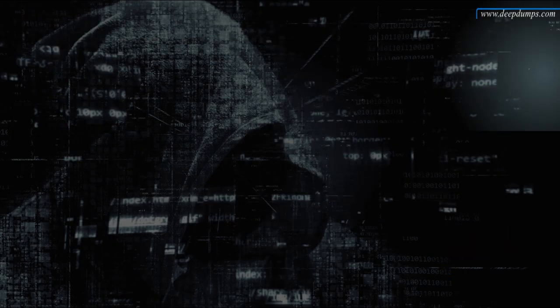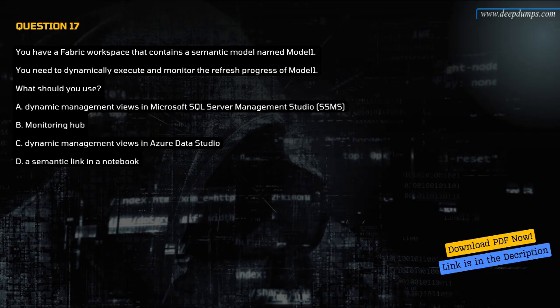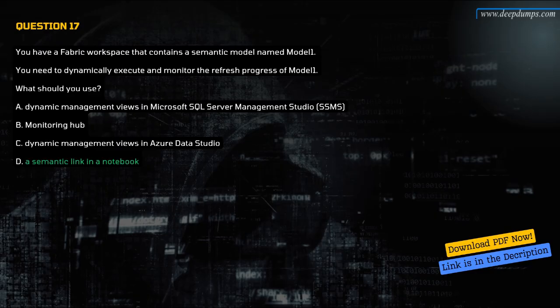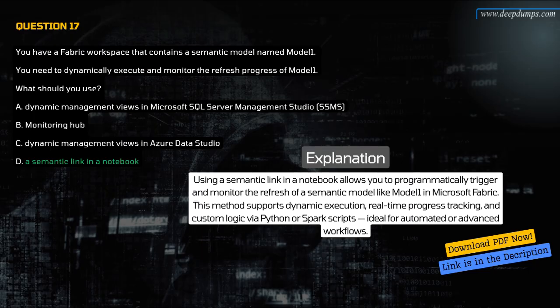Question 17. You have a Fabric workspace that contains a semantic model named Model 1. You need to dynamically execute and monitor the refresh progress of Model 1. What should you use? A. Dynamic management views in Microsoft SQL Server Management Studio. B. Monitoring hub. C. Dynamic management views in Azure Data Studio. D. A semantic link in a notebook. The correct answer is D. A semantic link in a notebook. Using a semantic link in a notebook allows you to programmatically trigger and monitor the refresh of a semantic model like Model 1. This method supports dynamic execution, real-time progress tracking, and custom logic via Python or Spark scripts, ideal for automated or advanced workflows.